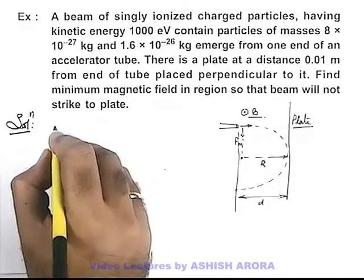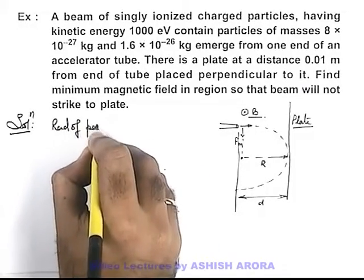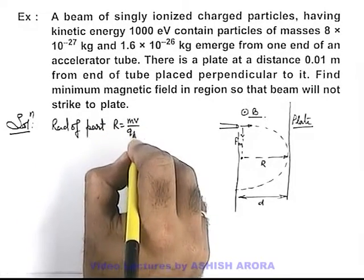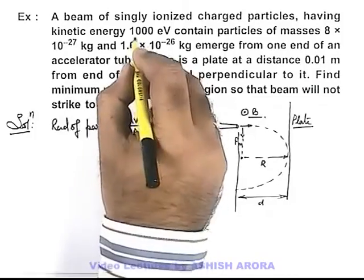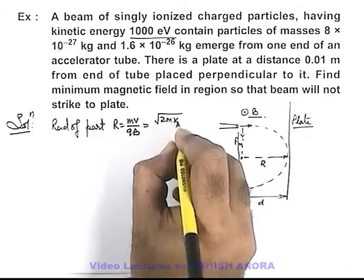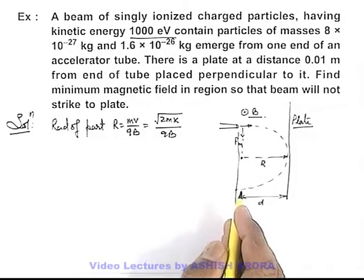So here we can use that the radius of particles in magnetic field r, we write that it is given as mv over qB. And here we are given with a kinetic energy this momentum we can write as root 2mK, K is the kinetic energy, by qB. This is the radius of the circular path.